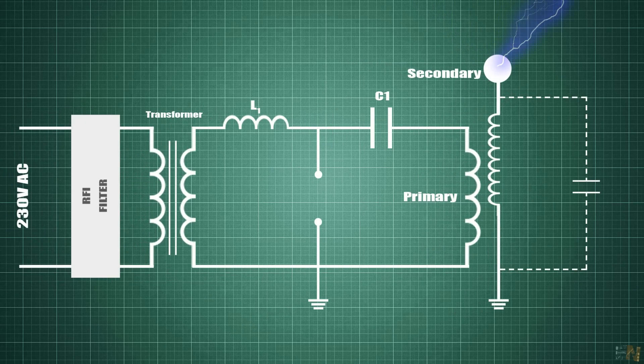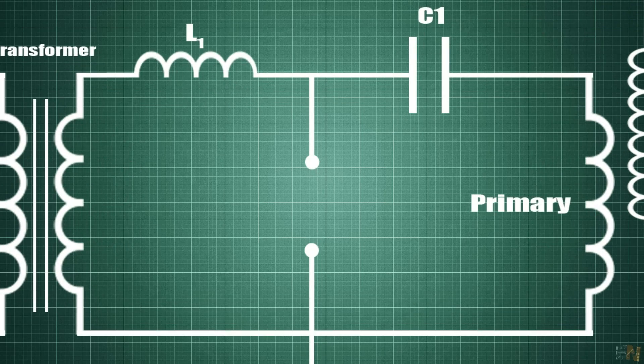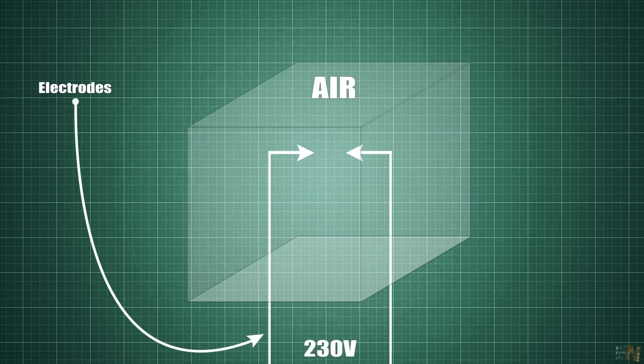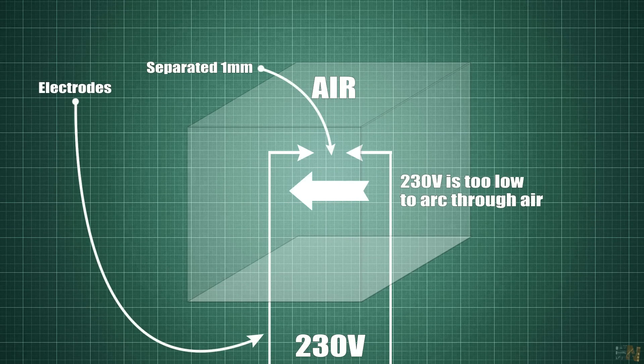But now what about that gap spark? Let's see some more theory. Air is a good insulator. That means it won't conduce electricity. But in reality, any material could conduce electricity.